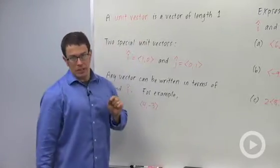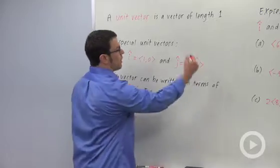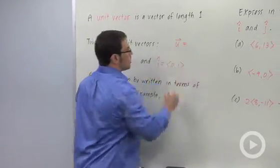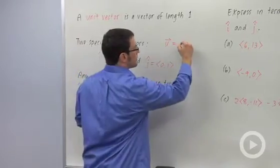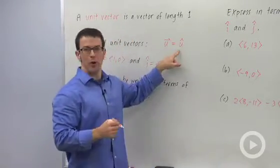Now there's some special notation for unit vectors. If you have a unit vector u, instead of writing this half arrow on top of the u, you'll often see it expressed as u hat. That's how this is read, u hat, with a little caret on top of it.